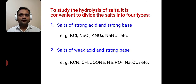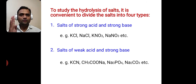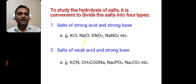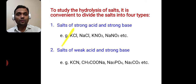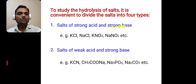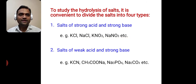To study the hydrolysis of salts, it is convenient to divide salts into four types. The first type is salts of strong acid and strong base — for example, KCl (potassium chloride), NaCl (sodium chloride), potassium nitrate, sodium nitrate, etc. KCl is formed from KOH, a strong base, and HCl, a strong acid. So KCl is a salt of strong acid and strong base.